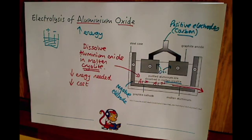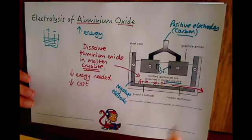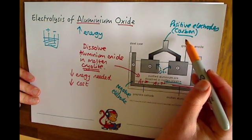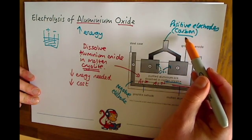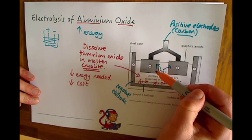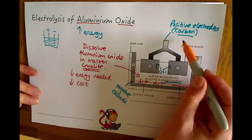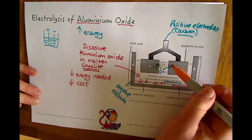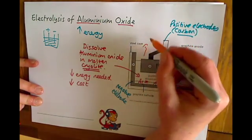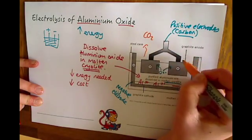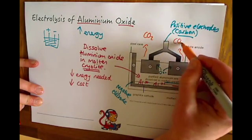Now I said I'd come back to carbon. The positive electrodes are made out of carbon, but what happens—as you've probably guessed—is that the carbon reacts with the oxygen to produce carbon dioxide. So the oxide ions react with the carbon, and carbon dioxide is released as a gas at these positive electrodes.